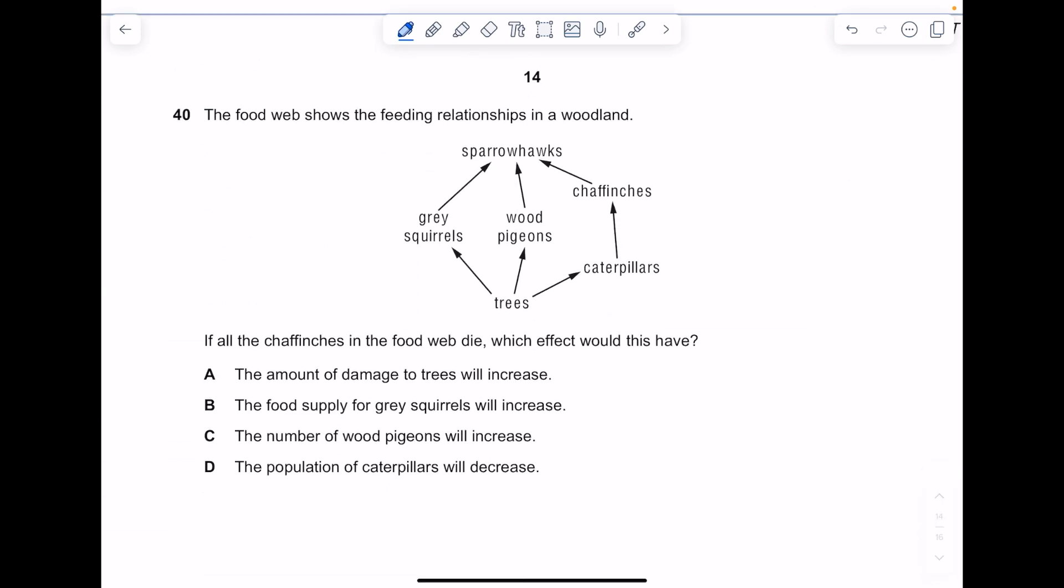The food web shows the feeding relationships in a woodland. If all the chaffinches in the wood die, which effect would this have? You'd expect the caterpillar number to increase because there are fewer chaffinches eating them, but the sparrowhawk number to decrease because they have less chaffinches to eat. The food supply for grey squirrels - there's more caterpillars to eat the trees which is a food supply. The amount of damage to trees will increase - yes, because there's more caterpillars. Beautifully done.